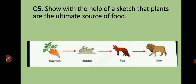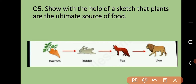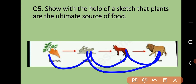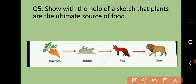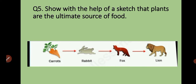Question number five: show with the help of a sketch that plants are the ultimate source of food. In the picture you can see that a rabbit eats a carrot, and then a fox is a carnivore. So the food chain goes: plants, rabbit, fox, and lion. Lion and fox also eat rabbit. Directly and indirectly, all animals depend on plants. If herbivores did not eat plants, carnivores would have no animals to eat. In this way, plants are the ultimate source of food for all living organisms.